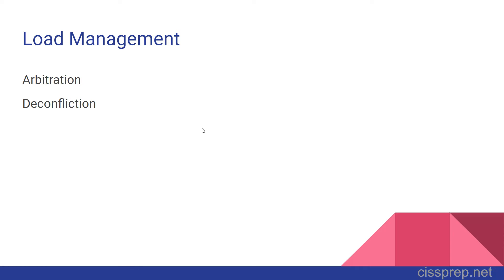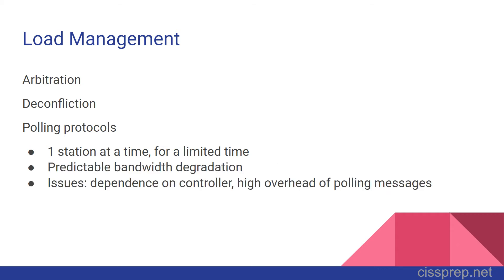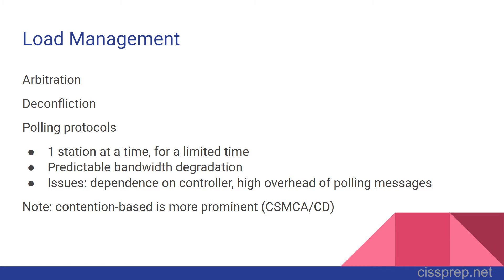These two terms are mostly for informational purposes. There are two protocols to address the problem: polling protocols and contention-based protocols. With polling, only one station at a time is allowed to transmit and is given a specific amount of time on the network after a poll is conducted by a controller. As more nodes are connected, bandwidth degrades in a predictable manner. Issues to consider include dependency on the controller and high overhead of polling messages. Contention-based protocols are where nodes compete for bandwidth and are already covered in the 2018 materials.